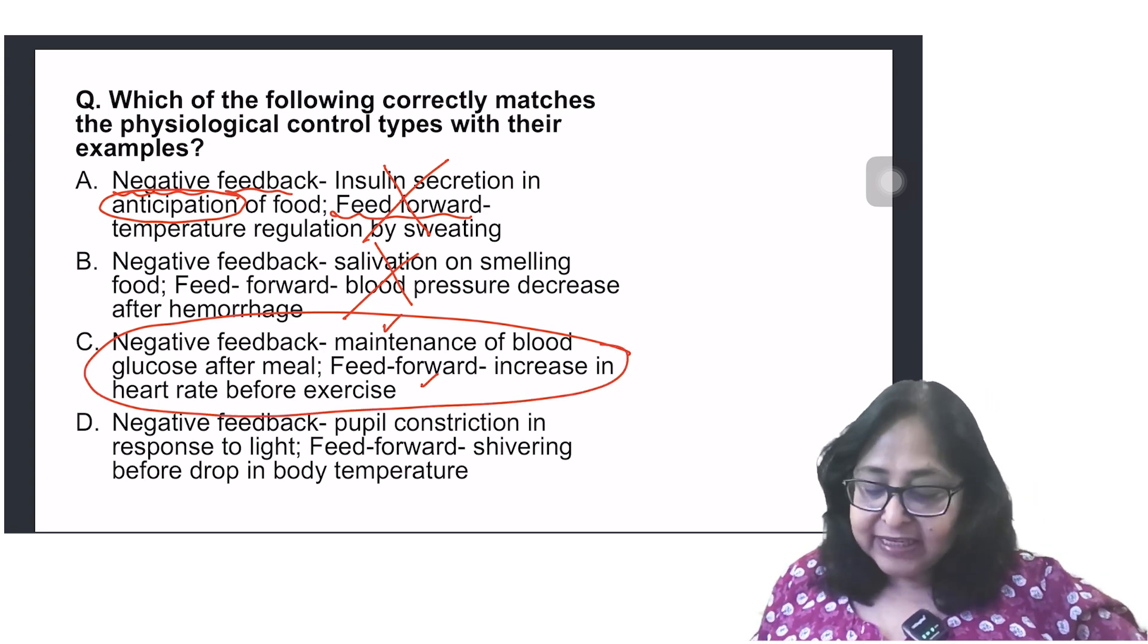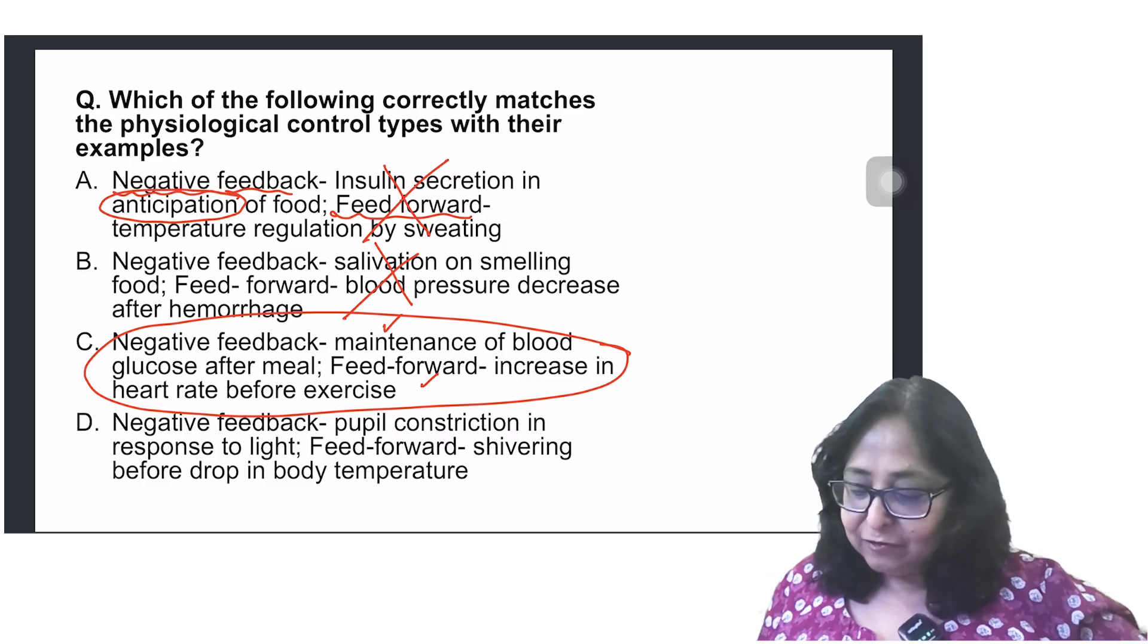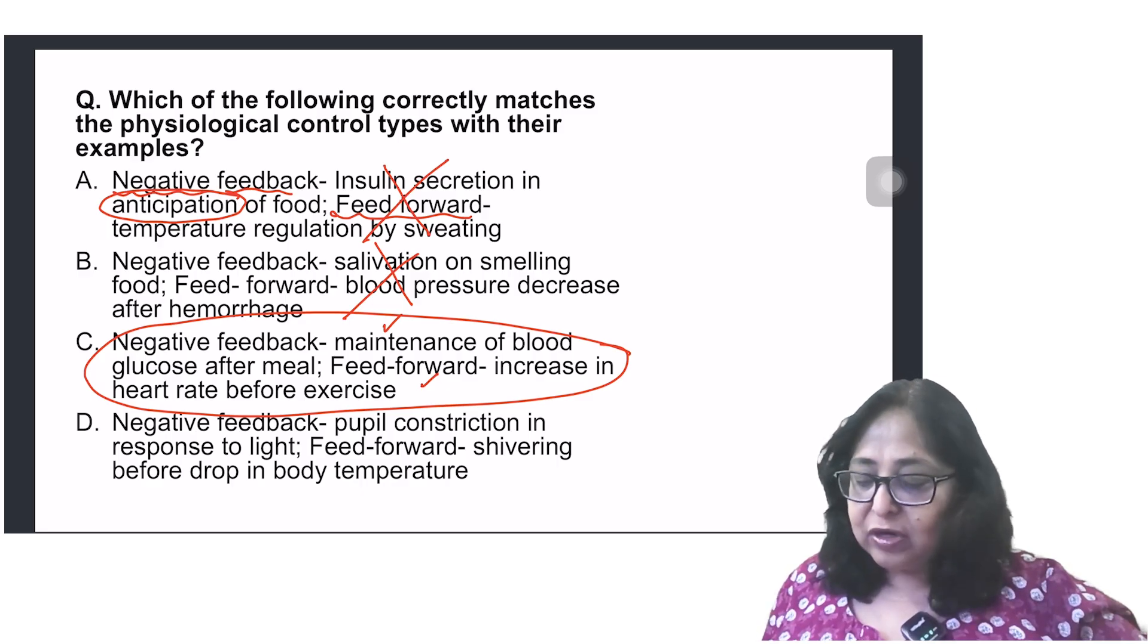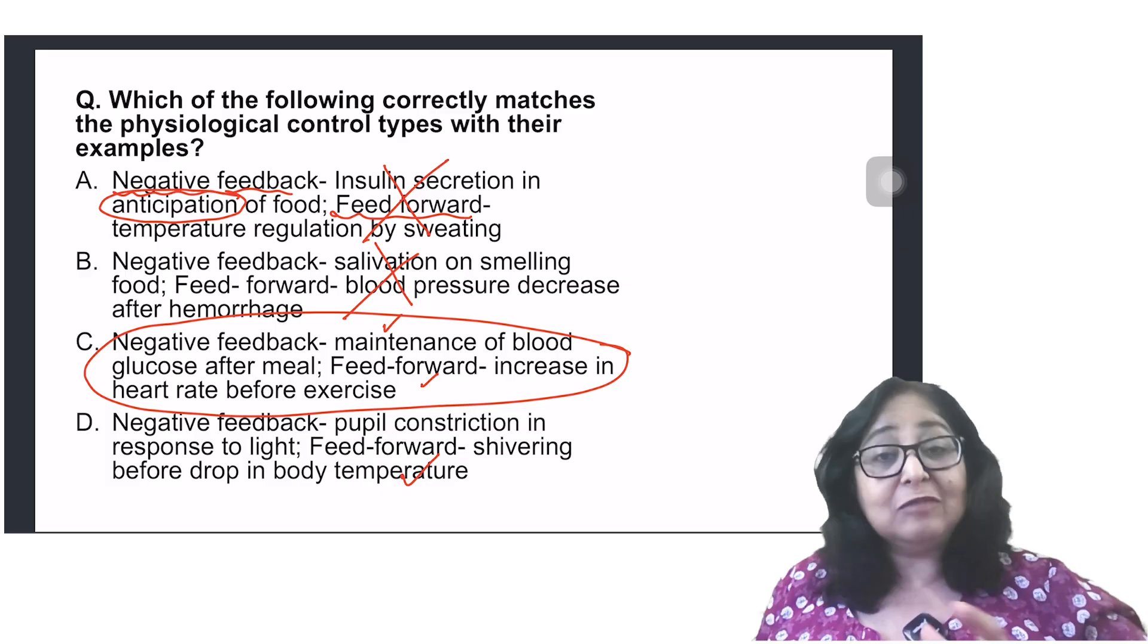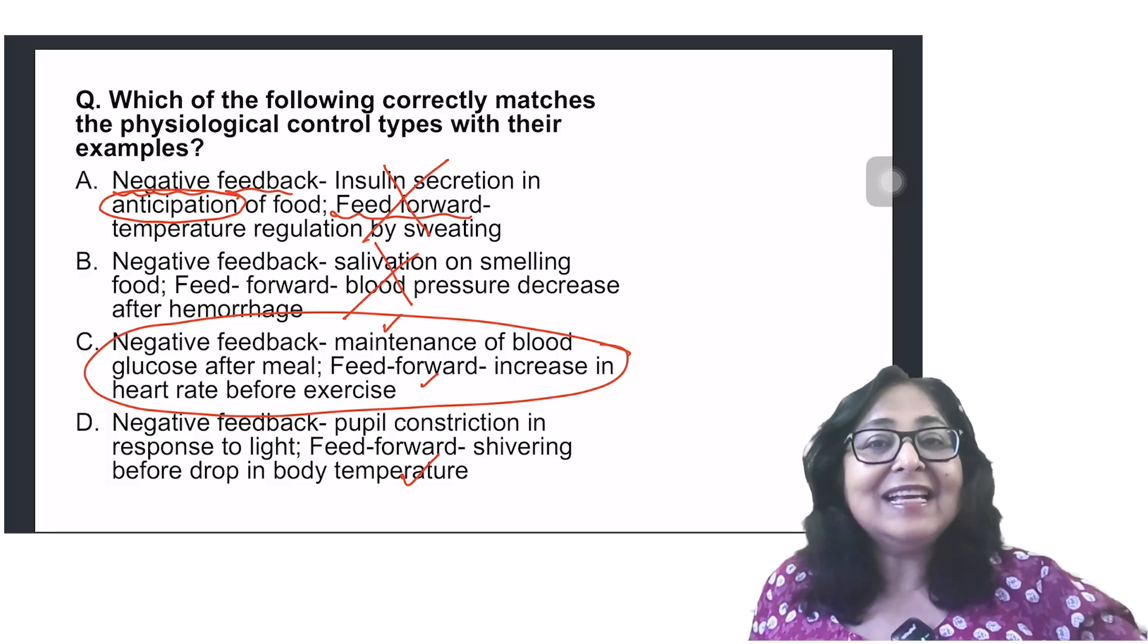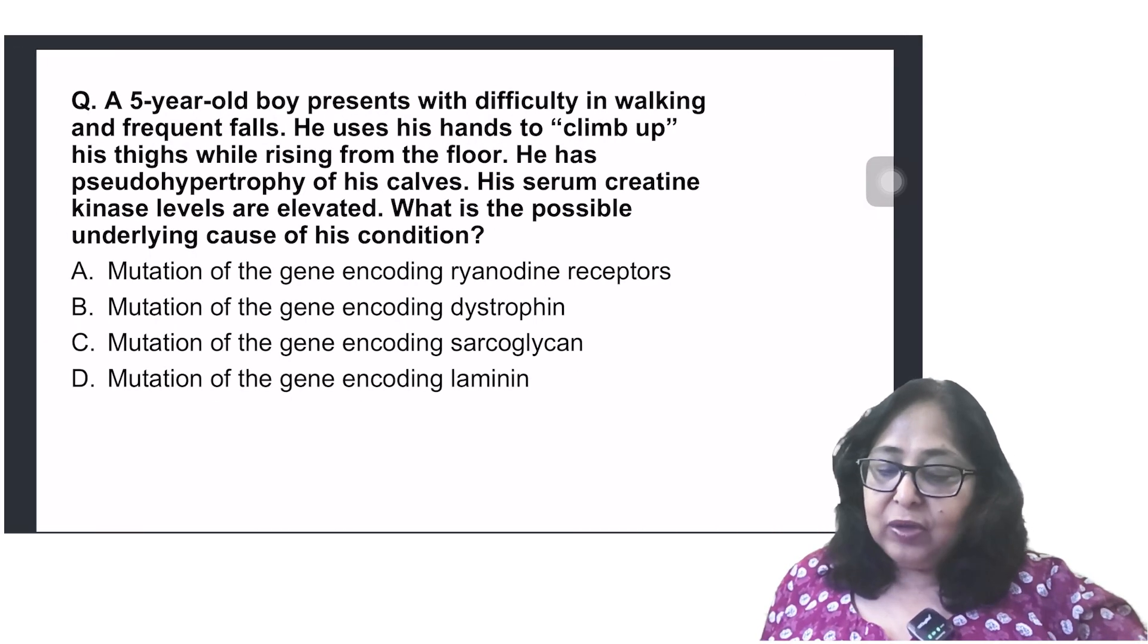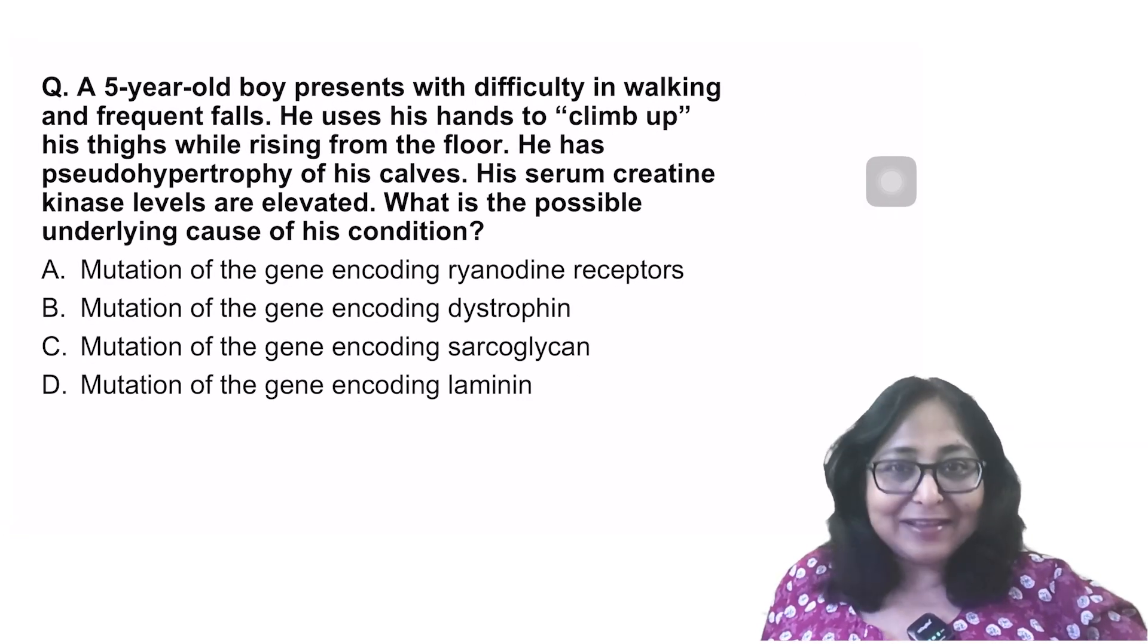C is your correct option. Let's also have a look at D. Negative feedback: Pupil constriction in response to light. It is a reflex response. Feed forward shivering before drop in body temperature. This is correct. So this is partially correct. Therefore, my best answer here is C. Let's have a look at the next question.